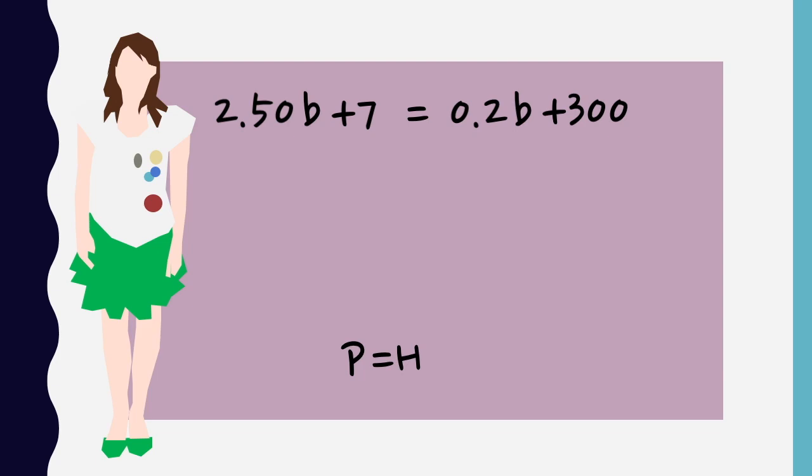So if we subtract seven, we'll be able to cancel out the seven on the left hand side, because subtracting seven is the inverse operation to adding seven. But then we need to make sure we apply that operation to both sides. Applying operations to both sides will mean that the equality in the middle will still hold.